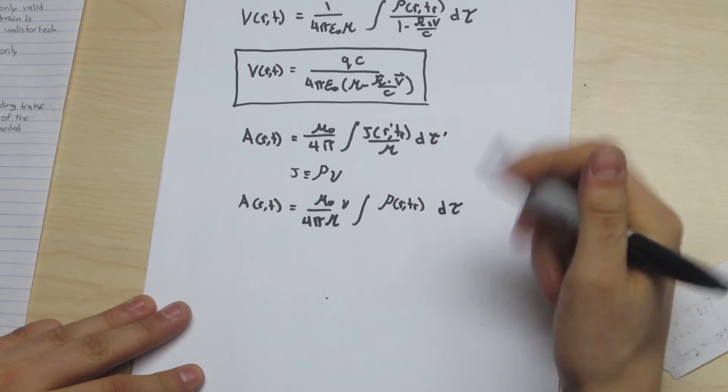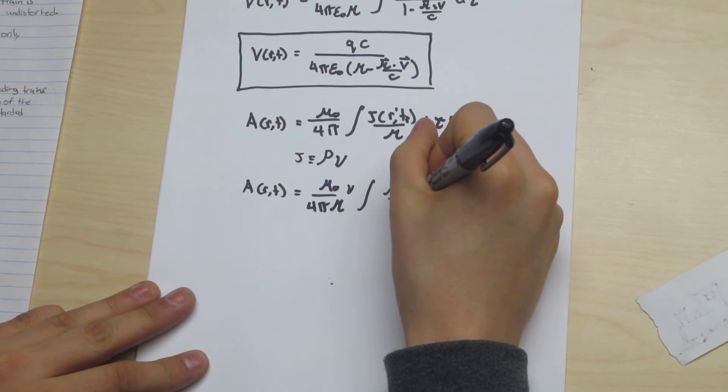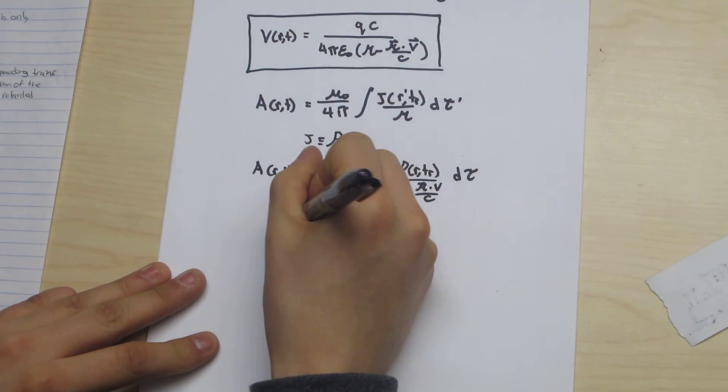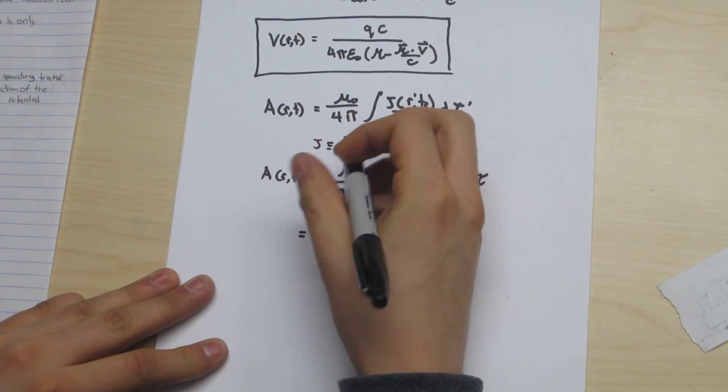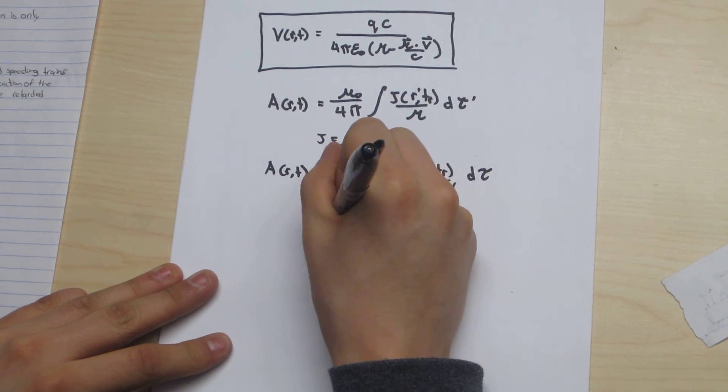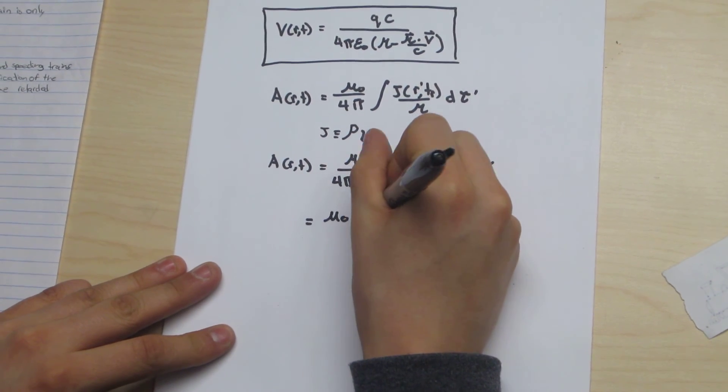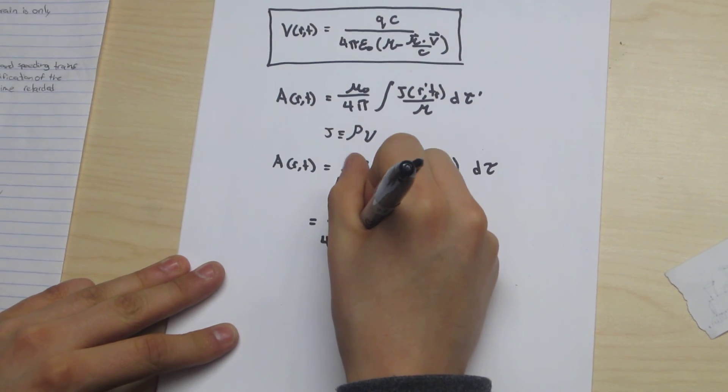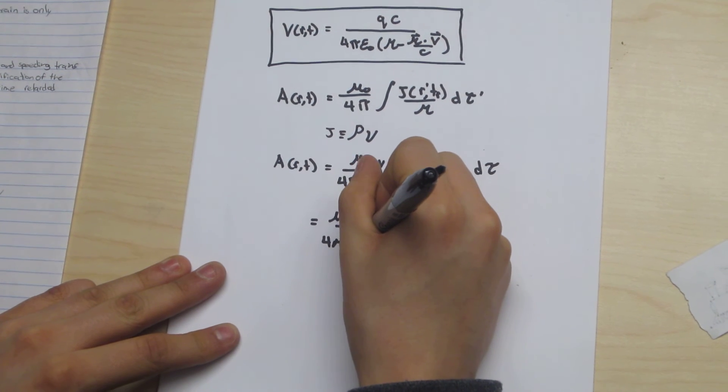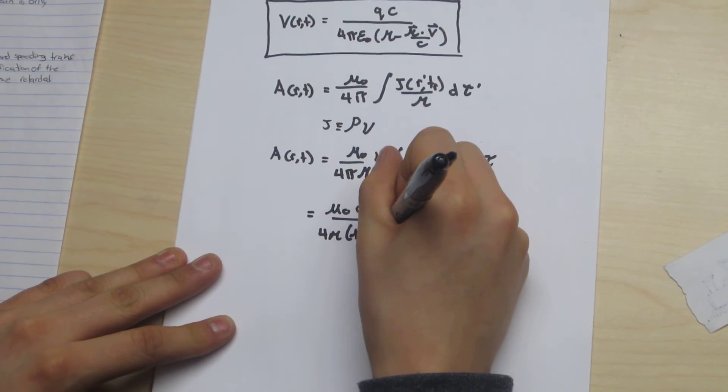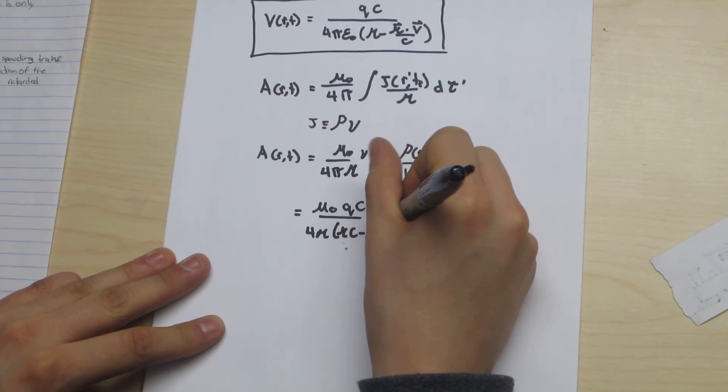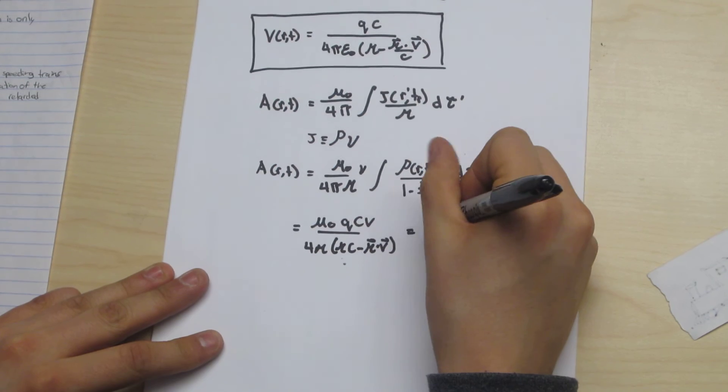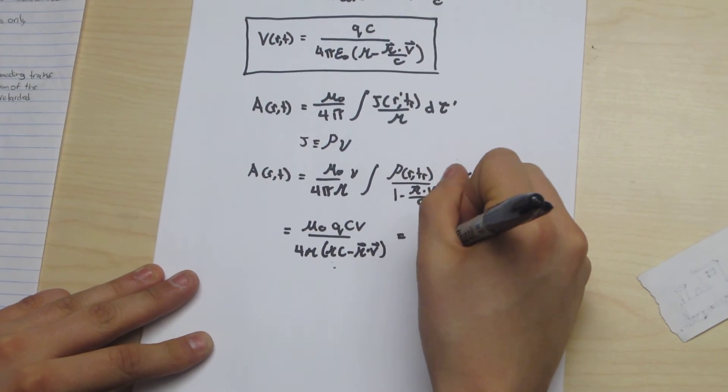And again our correction factor is still valid, which still happens to be equal to v over c squared.